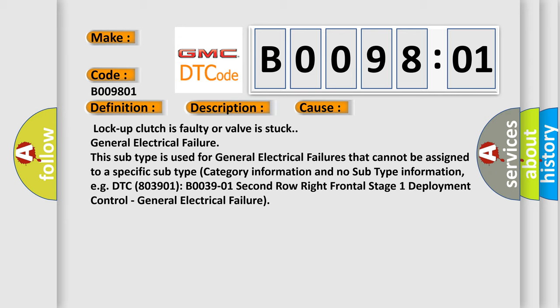Lockup clutch is faulty or valve is stuck. General electrical failure. This subtype is used for general electrical failures that cannot be assigned to a specific subtype category. For example, DTC B003901, second row right frontal stage 1 deployment control, general electrical failure.